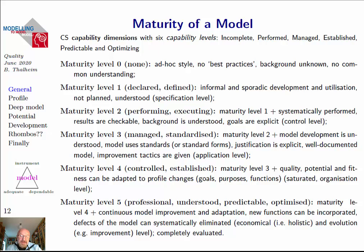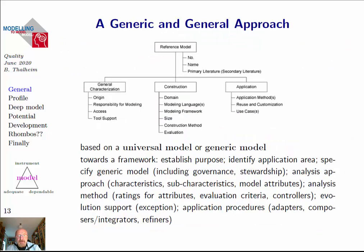Maturity level 4 leads to a proper establishment — you know the quality, the potential, and the fitness, and you can adapt all this to the profile you have in mind, including other functions and scenarios. Maturity level 5 is a dream level where everything is well understood, predictable, and optimizable, enabling automatic improvement and maintenance of models. This can be done on the basis of universal models, generic models, or reference models, where you have characteristics that describe the model and you can develop a proper framework.